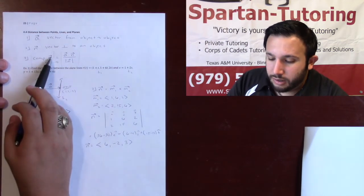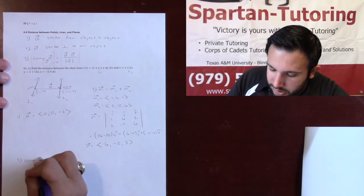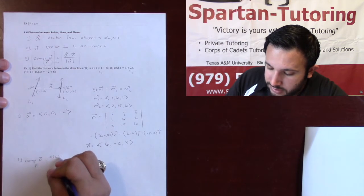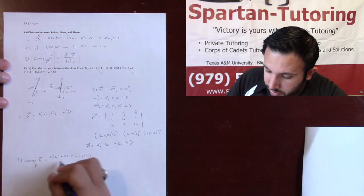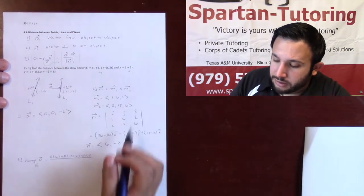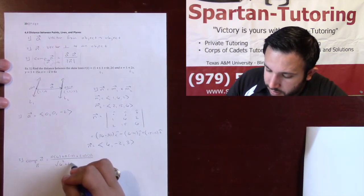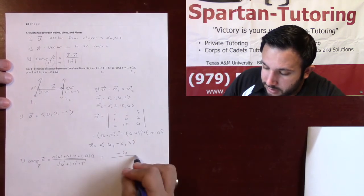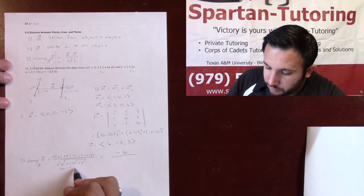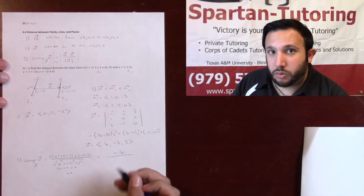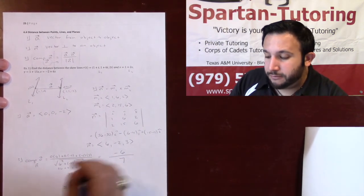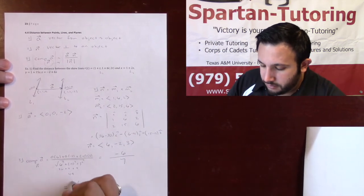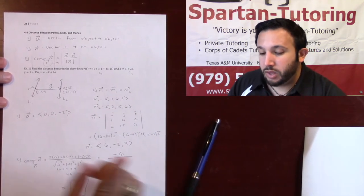Now for the last step: the scalar projection of A onto N. That's A dotted with N divided by the magnitude of N. Dotting: (0)(6) + (0)(−2) + (−2)(3) = −6. The magnitude of N is √(6² + (−2)² + 3²) = √(36 + 4 + 9) = √49 = 7. The scalar projection is −6/7, but since distance can't be negative, the distance is 6/7.